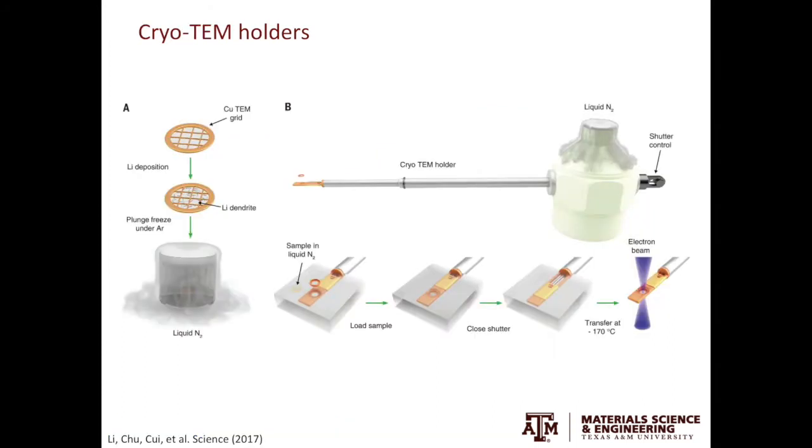The second type of TEM holders is the cryo holder. Cryo holders are largely used to study biological specimens without staining or fixing. However, you can also use that to study beam sensitive material science specimens.